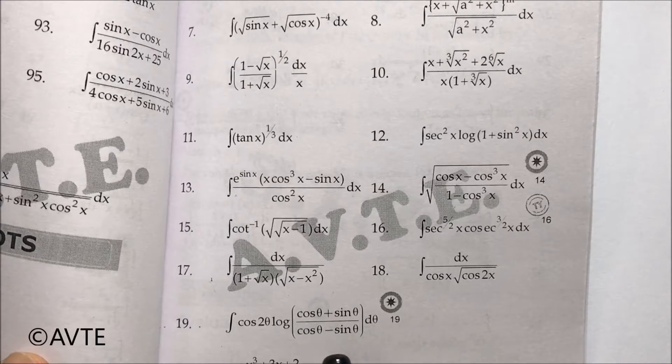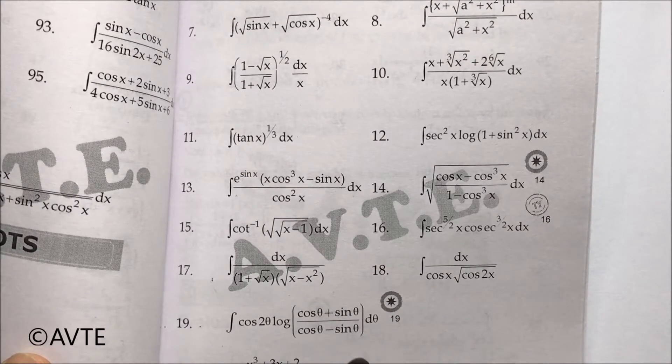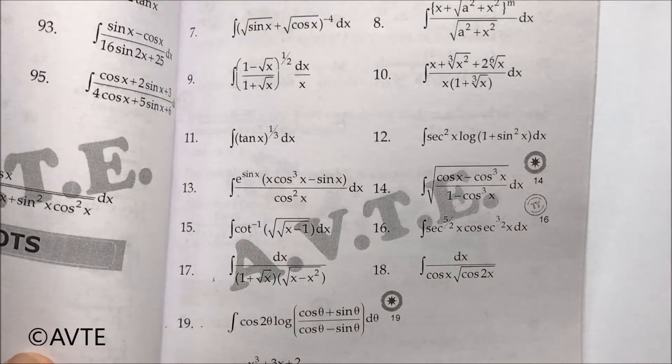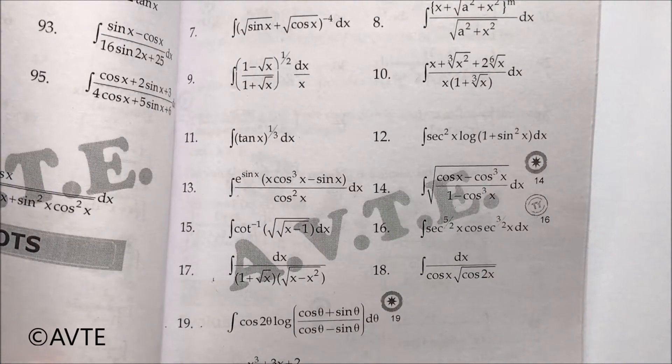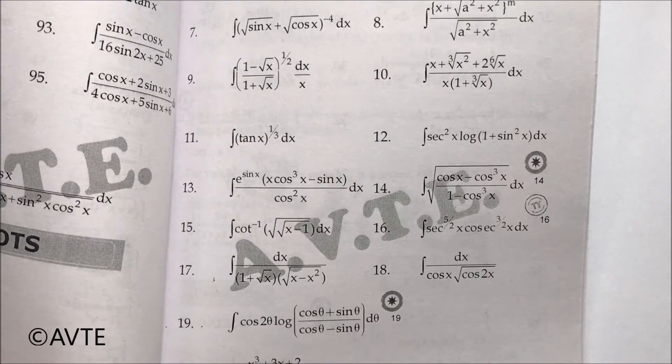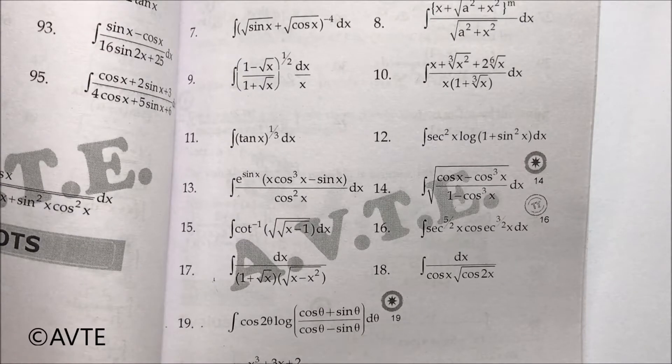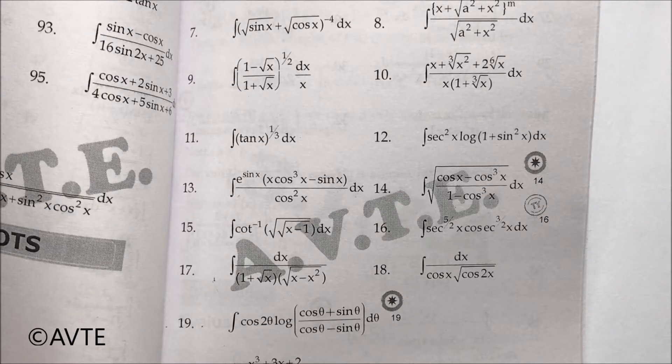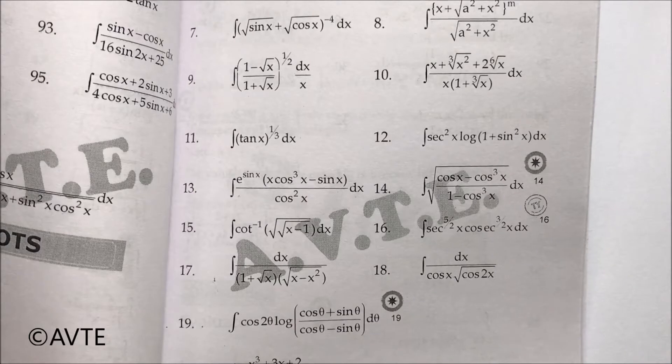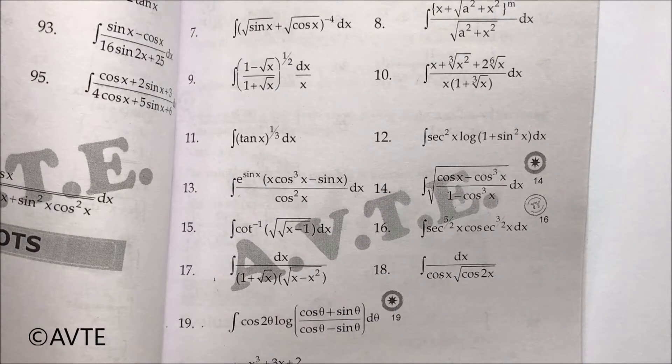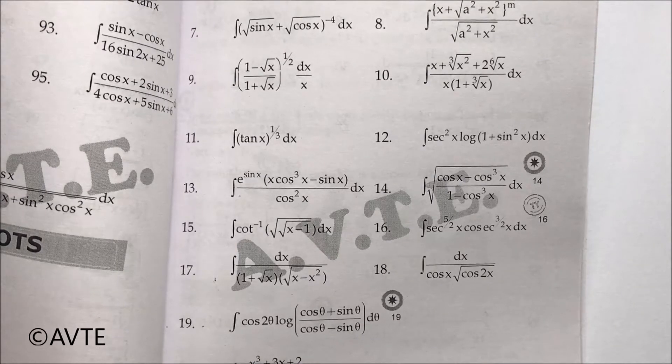This is a very important question we have compiled under HOTS. This question is on by-parts and you can do this by various methods. You can apply log m/n as log m minus log n, but what we are doing is dividing each term by cos θ within log.